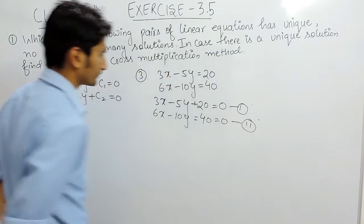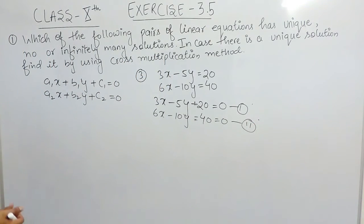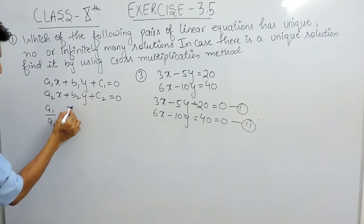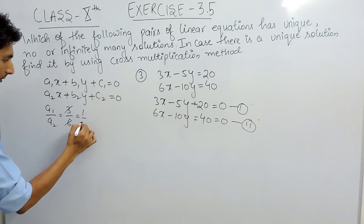Now let's find what should be the ratio between their coefficients. So a1 upon a2 must be equals to 3 upon 6. a1, a2 are the coefficients of x in both equations. So the ratio is 1 by 2.